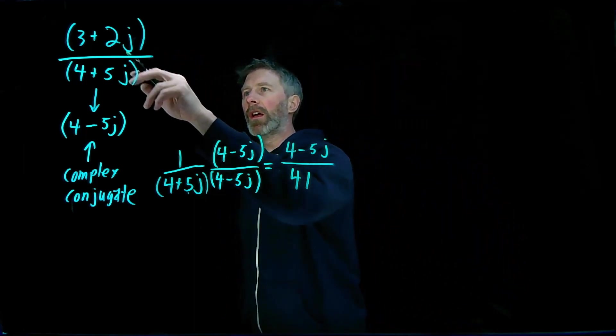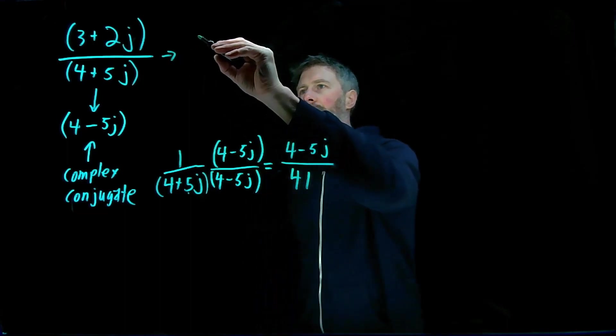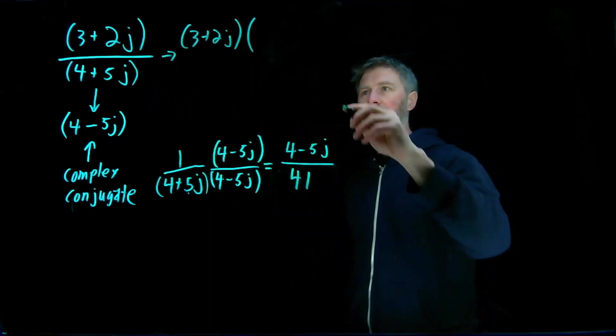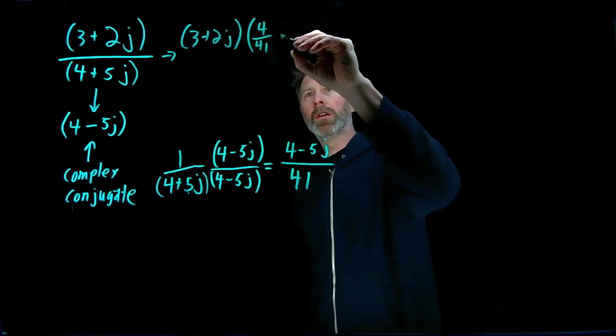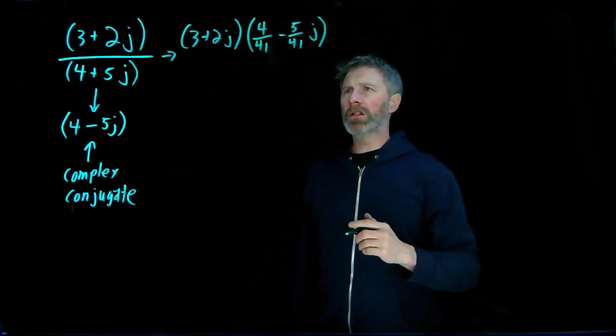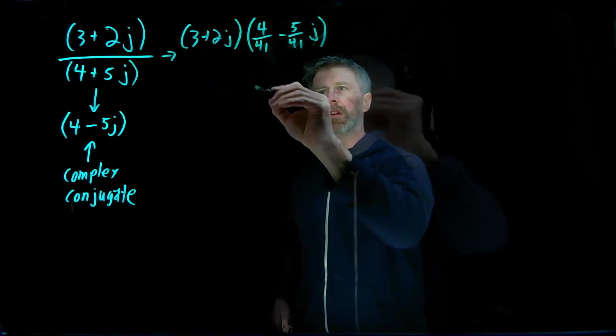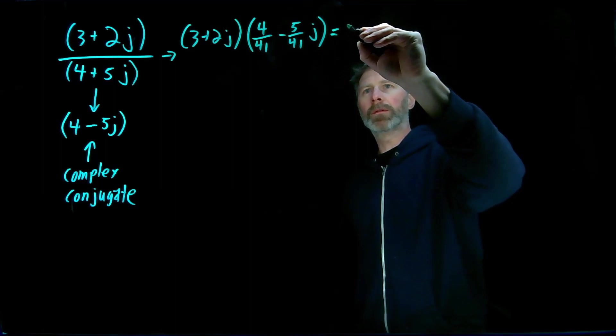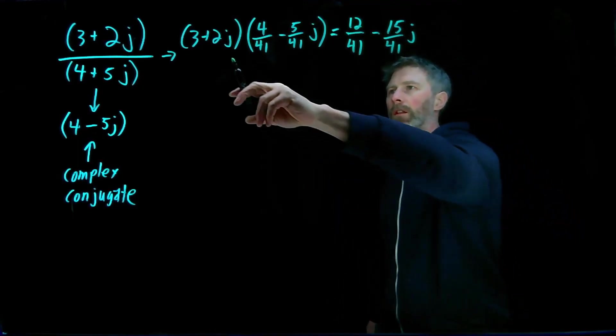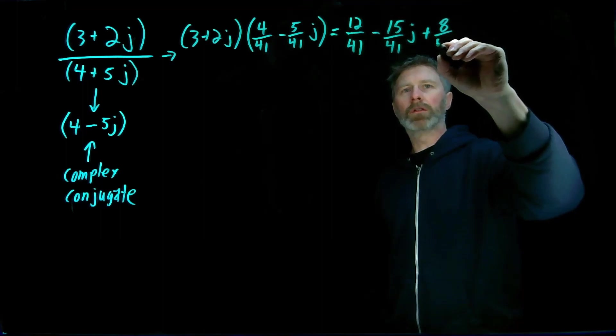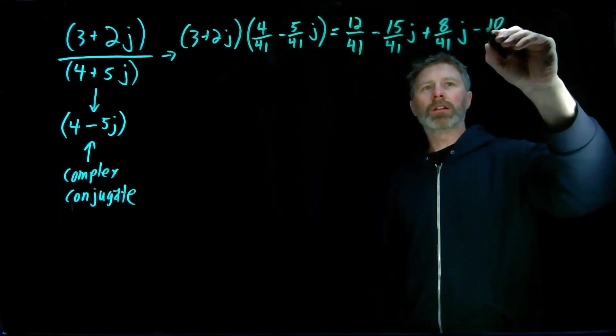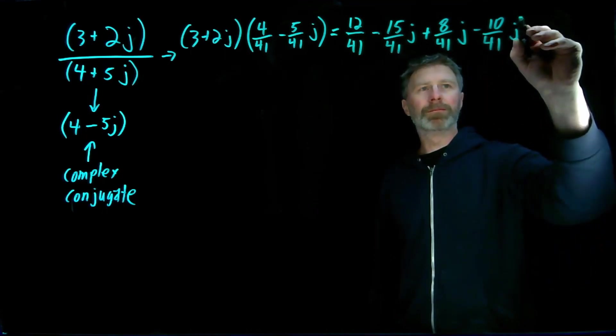So ultimately what this means is to get 3 plus 2j divided by 4 plus 5j, I can go 3 plus 2j times the inverse of that, which is this value that we've just figured out, so times 4 over 41 minus 5 over 41j. And again, this multiplication is going to involve expanding out these two values. So I end up with 3 times 4 over 41, that times that gives me minus 15 over 41j, and then 2j times 4 over 41, minus 10 over 41j squared. Don't forget that squared part.